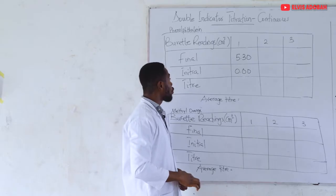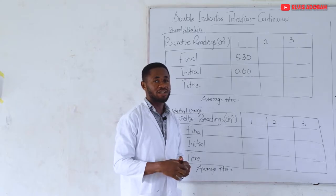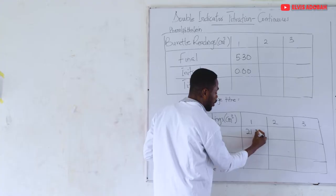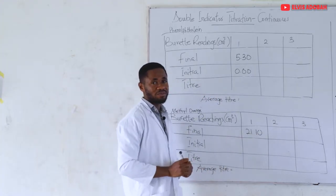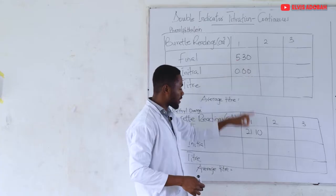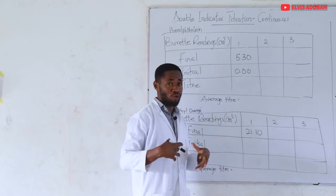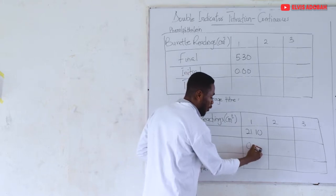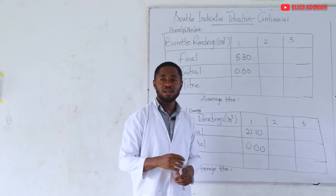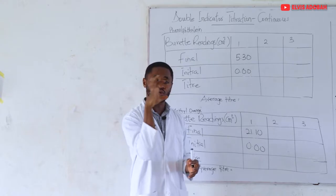We continued by adding three drops of methyl orange and ended up at a titre value of 21.10. Here there are two things you could do: you could either make 5.30 your initial over here, or do what I'm going to do — write your initial as 0.00, the same initial as the phenolphthalein titration.